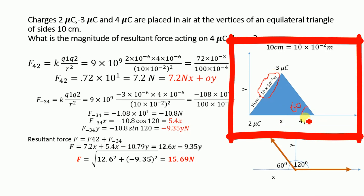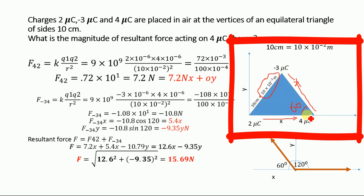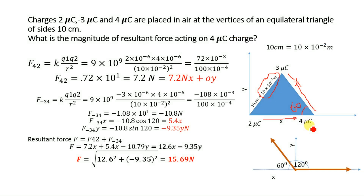Two forces are acting on this 4 µC charge. One is the repulsive force due to the 2 µC charge. The second is an attractive force due to the minus 3 µC charge — it is attractive because that charge is negative and the 4 µC charge is positive. The force from the 2 µC charge is repulsive because both charges are positive.